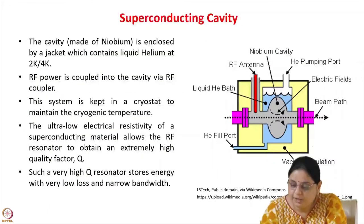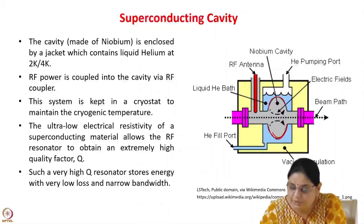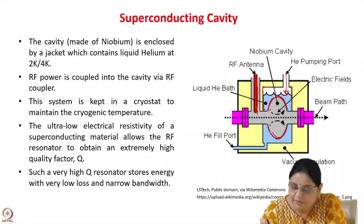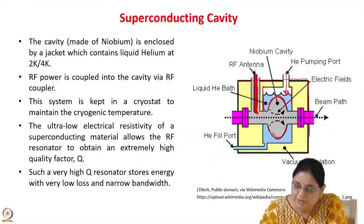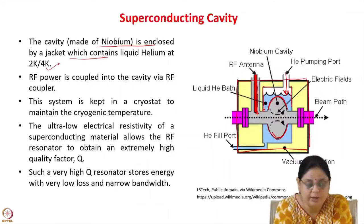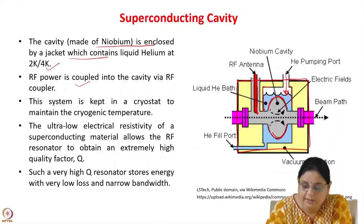Here is a block diagram of the entire system for a superconducting cavity. We have a superconducting cavity made of niobium whose inner surface must be maintained at cryogenic temperatures. The cavity is enclosed inside a jacket filled with helium at 2 K or 4 K, which cools the cavity surface and makes it superconducting. RF power is then coupled in, and the whole system is placed inside a cryostat. The RF power is coupled into the cavity via an RF coupler.